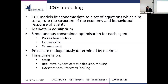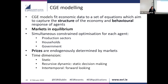It's basically a simultaneous constrained optimization for multiple agents, where an agent is a production sector, household, or government. These different optimizations determine relative prices in the economy. Prices are endogenously determined by these markets and drive behavioral change — as prices change, production sectors switch to cheaper inputs and households change their consumption bundles. If the price of apples goes up, they'll switch to pears.